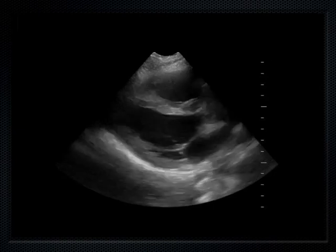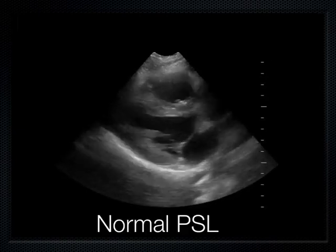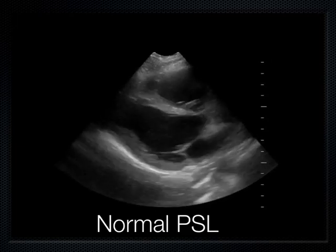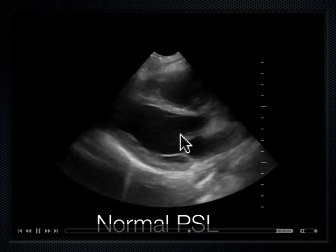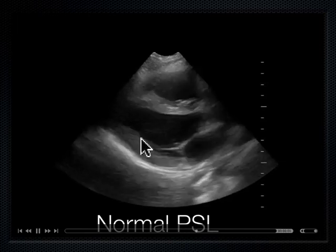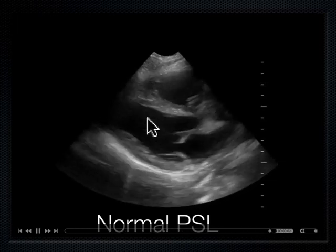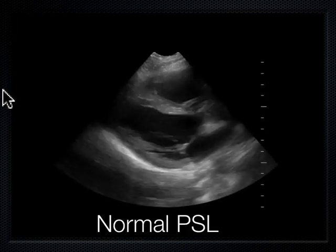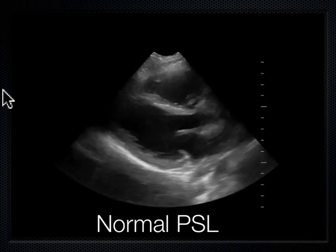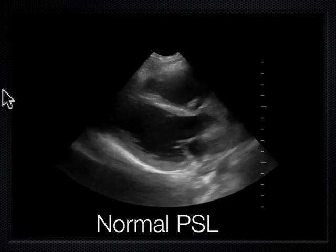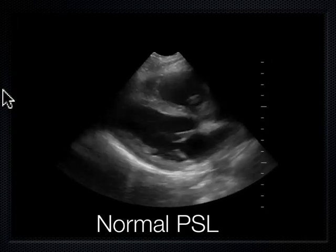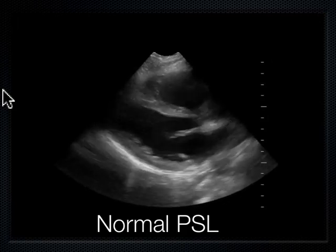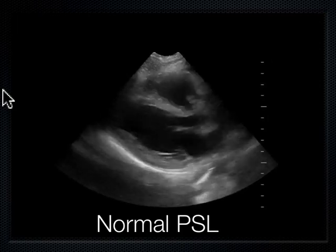This is what a nice normal parasternal long axis looks like. I'm looking for two main things: that the mitral valve comes up and smacks that septum, and that the posterior wall and interventricular septum make their way towards each other — and indeed they are doing that in this view. Clinically, if I have a hypotensive patient with a blood pressure of 70 over 40, if I saw a normal functioning left ventricle like this, I could safely give this person fluids — that would probably fix their hypotension.